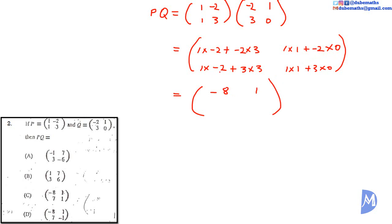1 multiplied by -2 is -2, added to 3 multiplied by 3 is 9. Negative 2 added to 9 is the same as 9 take away 2, which is equal to 7. And 1 multiplied by 1 is 1, added to 3 multiplied by 0 is 0; 1 plus 0 is equal to 1. The answer is the matrix (-8, 1; 7, 1). The answer is C.